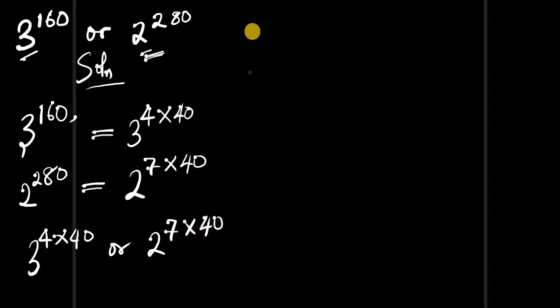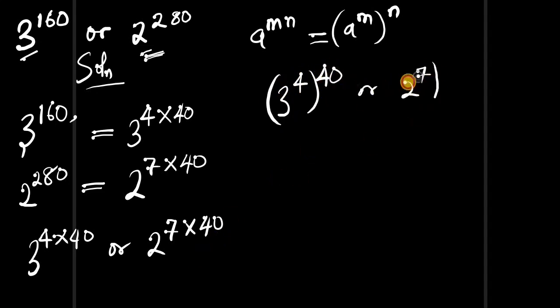Now let's use this identity: if you have a to the power of m times n, this equals a to the power of m raised to the power of n. This means we have 3 to the power 4 raised to the power 40, and 2 to the power 7 raised to the power 40.